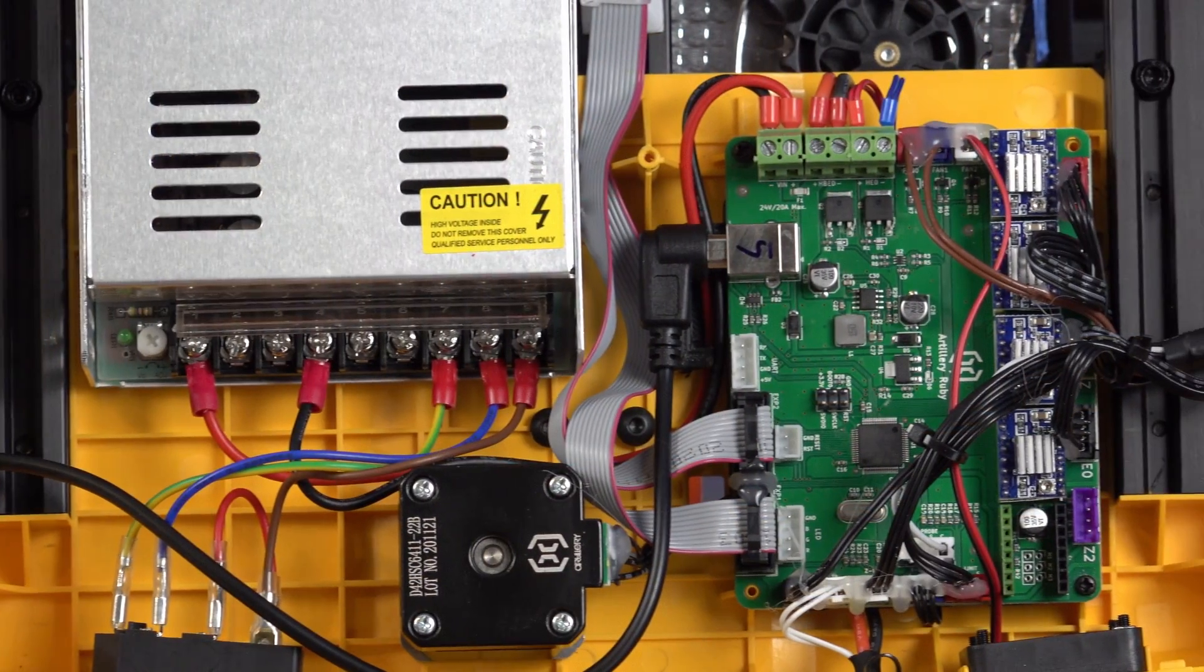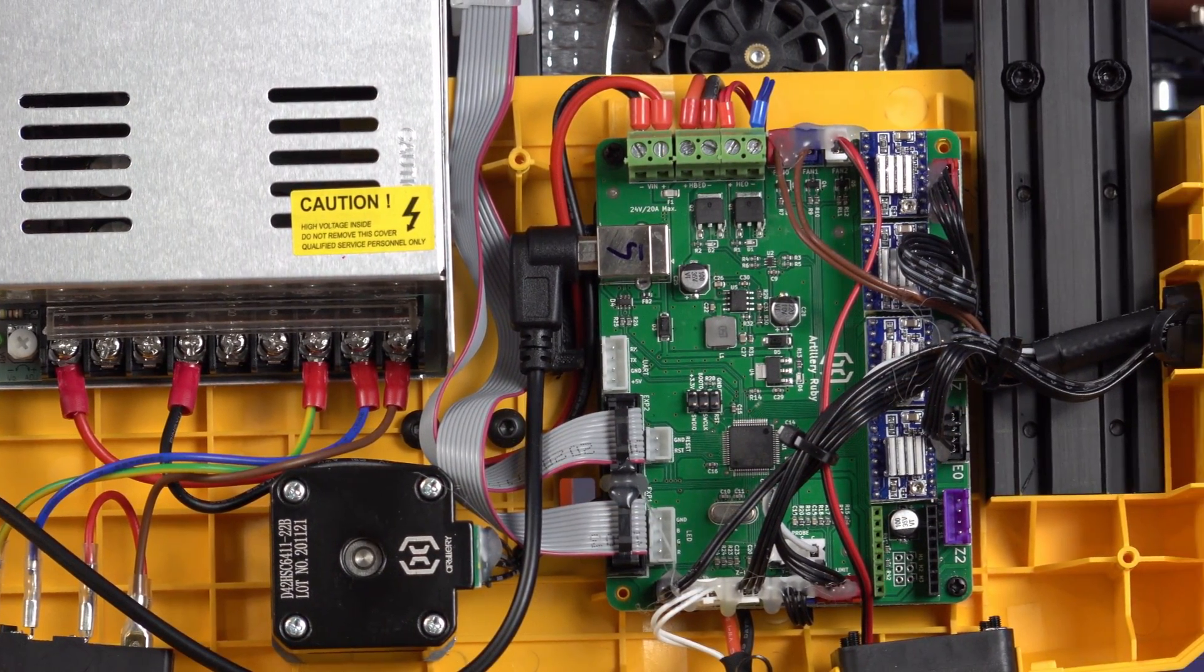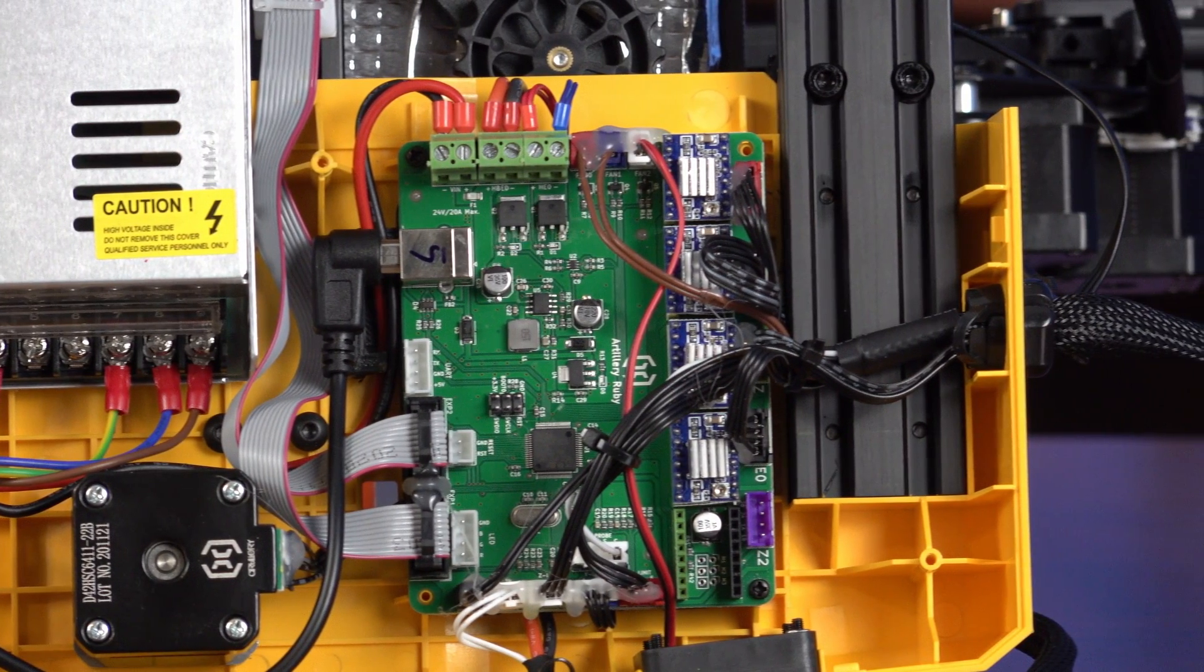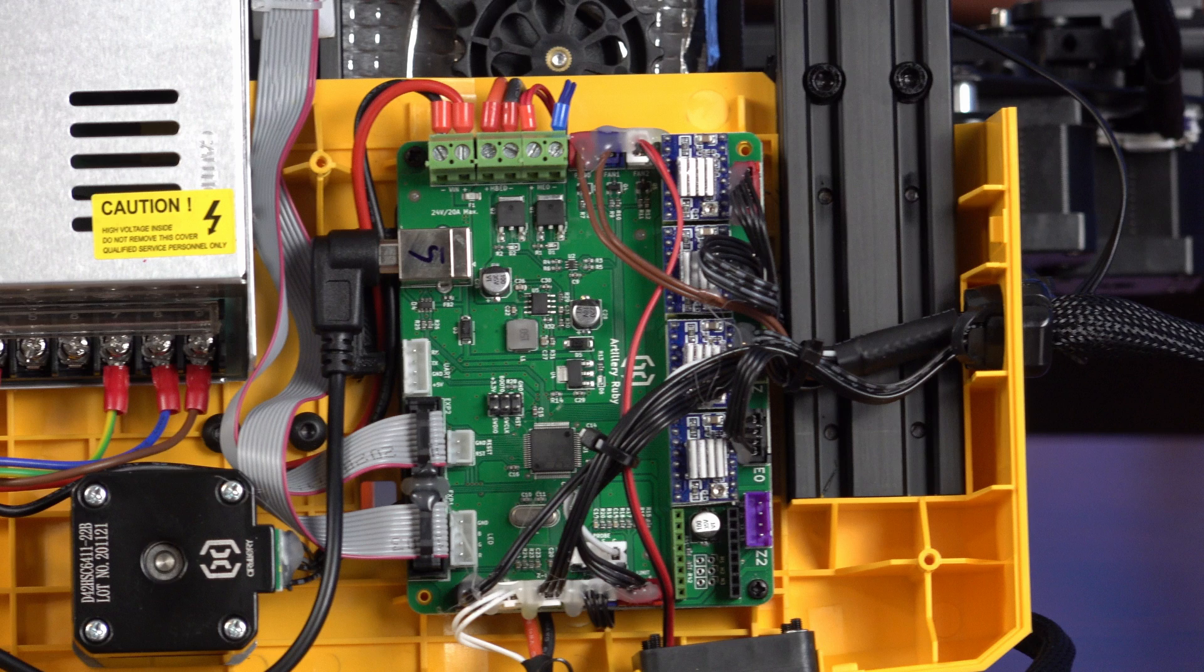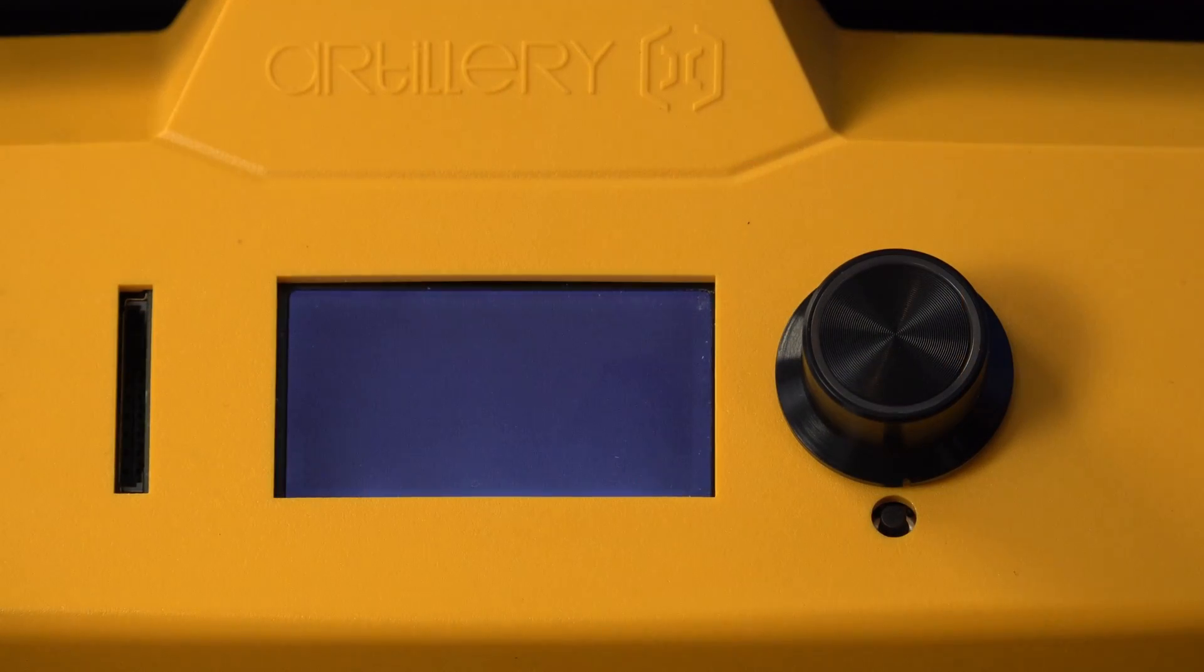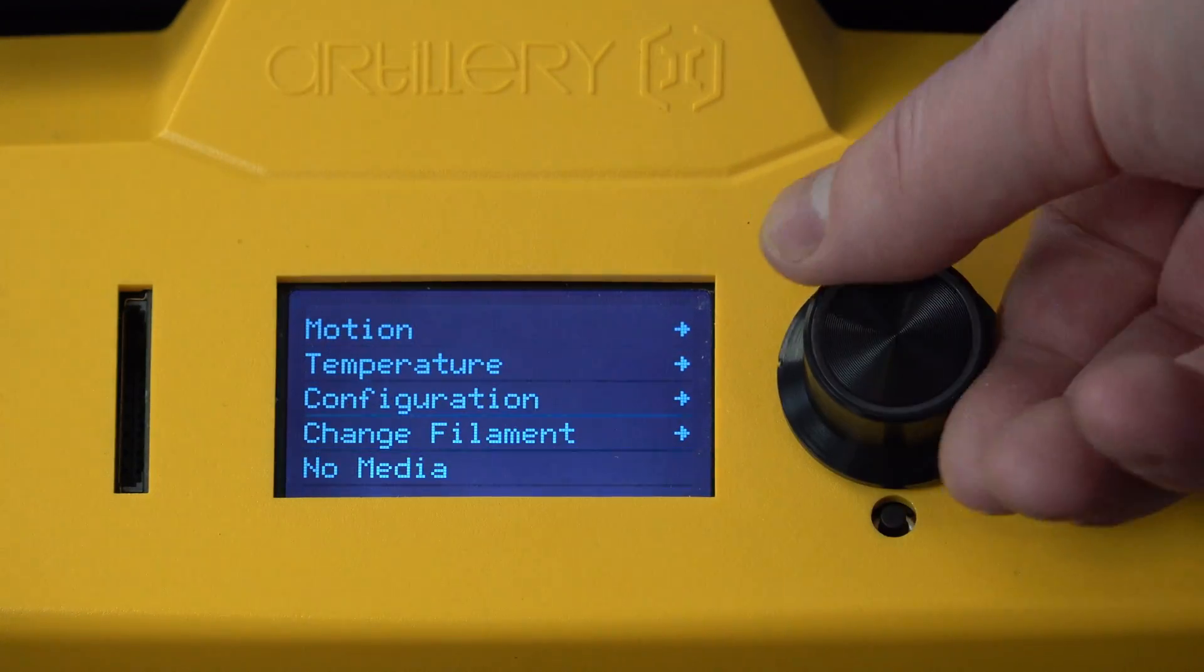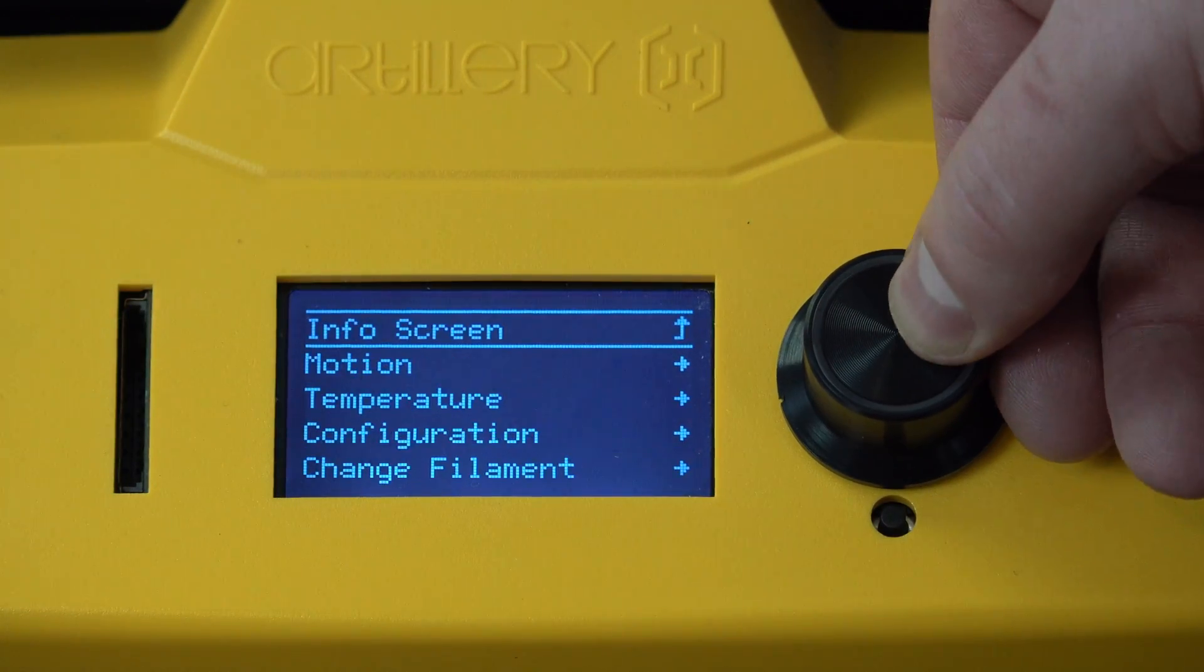For the brains, it's got a 32-bit Artillery Ruby mainboard outfitted with whisper quiet TMC 2100 stepper drivers that are removable should you need to replace one in the future. This is a nice touch. The interface is your more traditional rotary knob push button style screen. This I imagine is a way to keep costs down without affecting printing quality.